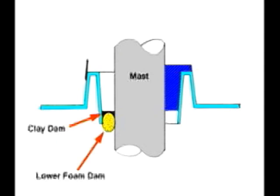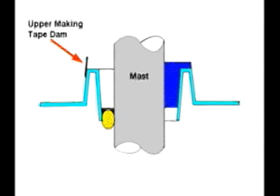You form a dam at the bottom of the mast collar here. This seals off the cavity formed by the mast collar and the mast itself. You then build a dam around the top of the mast collar using two-inch masking tape.